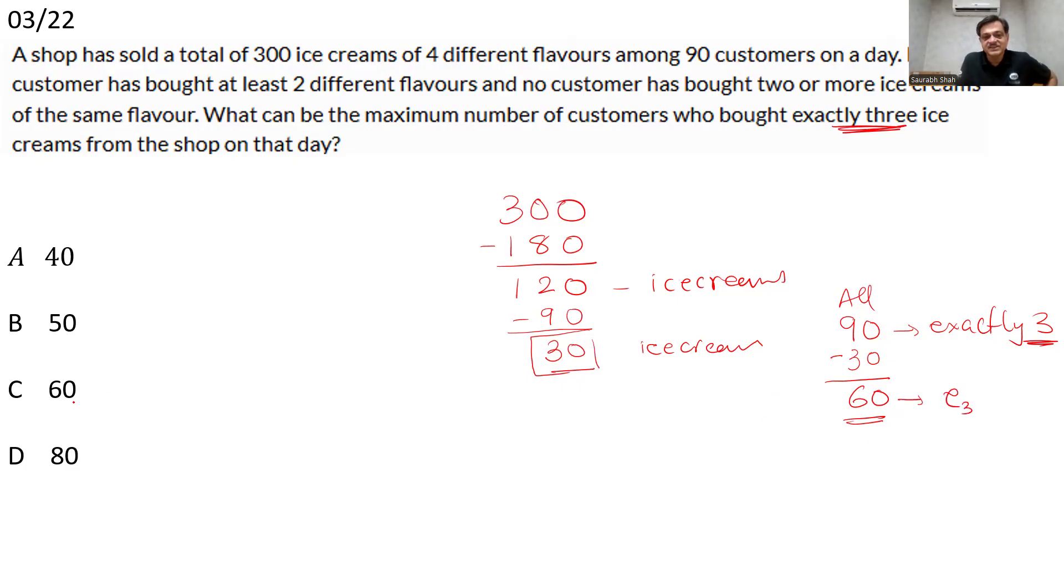60 customers will still be exactly three. So the correct answer is option C, 60. The third option is the answer. A very simple approach.